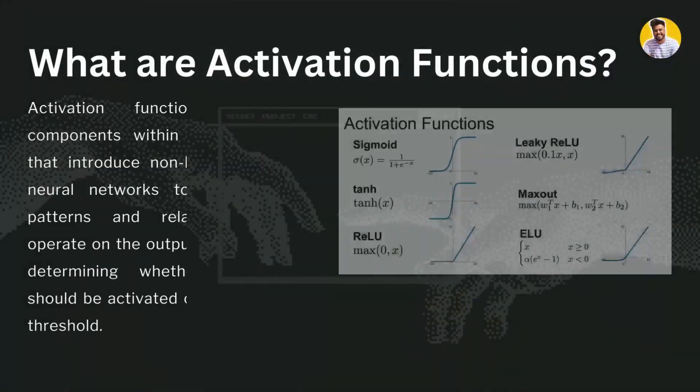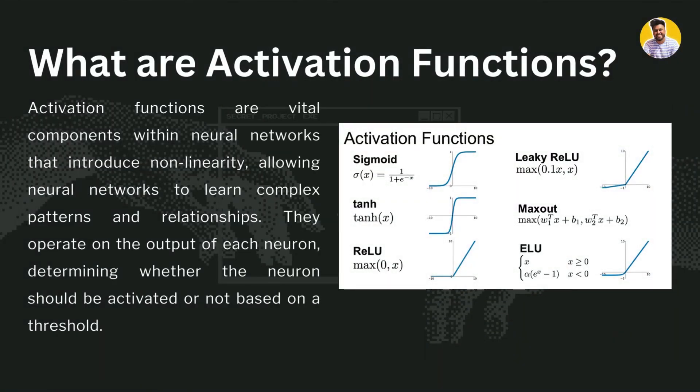Our first topic is: what are activation functions? Activation functions are vital components of neural networks and all deep learning algorithms. They introduce non-linearity, allowing neural networks to learn complex patterns and relationships. They operate on the output of each neuron, determining whether the neuron should be activated or not based on a threshold.